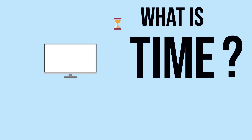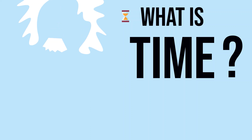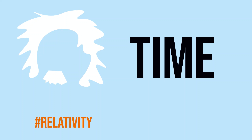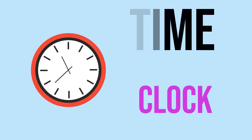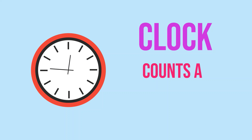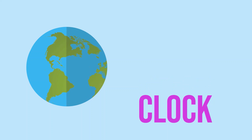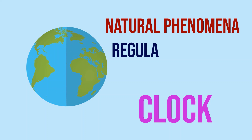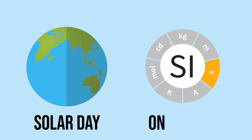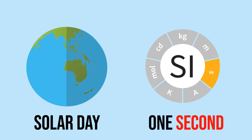First, let us explore the concept of time. Undoubtedly, time holds a unique place among all the quantities in nature. What is time? A question that contains many philosophical and scientific conundrums. The notion of time is linked with the concept of a clock — a clock is simply an apparatus that counts a repetitive event. Any natural phenomenon with regular periods of oscillation can be a clock. The base unit of time, one second, can be defined in terms of a solar day.